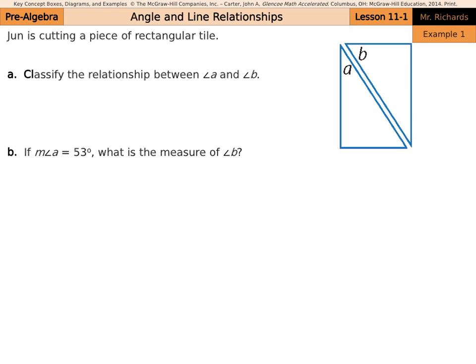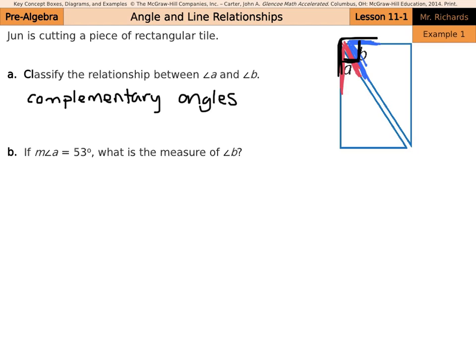In our first example, Jeanne is cutting a piece of rectangular tile. Classify the relationship between angle A and angle B. Redrawing these, angle A and angle B are almost adjacent and when you put them together they form a right angle. They add up to 90 degrees, so this is an example of complementary angles. Please write out 'complementary angles' — do not abbreviate.